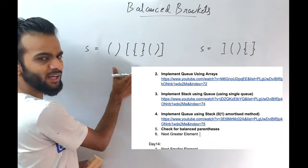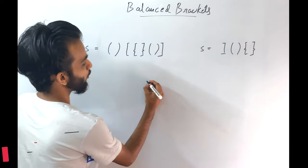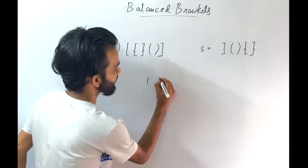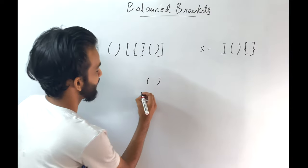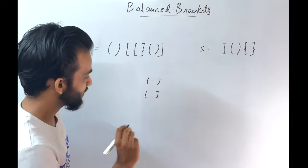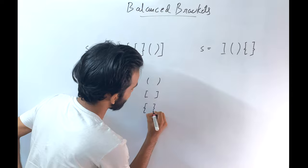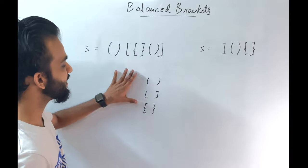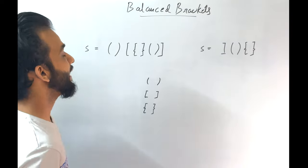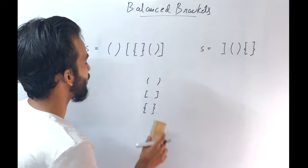You will be given a string which contains brackets of six kinds. There is the opening bracket and its corresponding closing. There is another type with its closing. And one more type with its closing. So these are basically three types of brackets given to you, and you have to tell if the string is a balanced bracket or not.